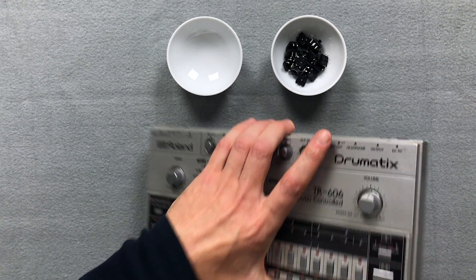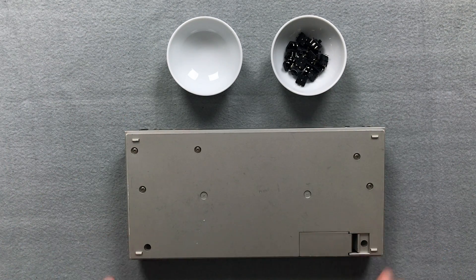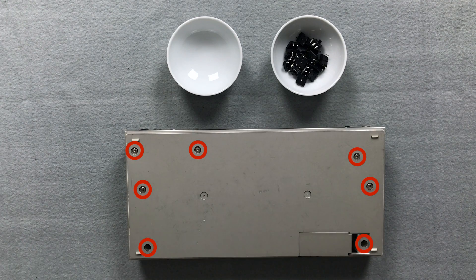First turn the TR-606 with the front side down and put it on a soft surface. Then unscrew the screws of the housing.